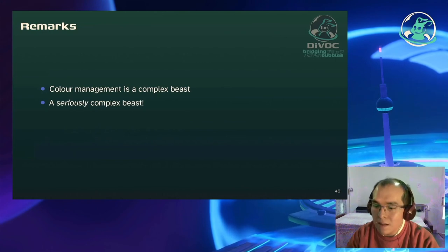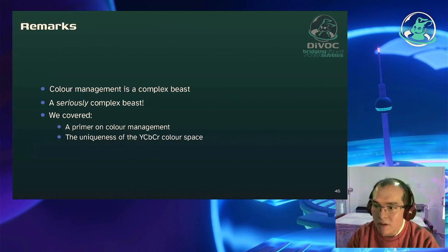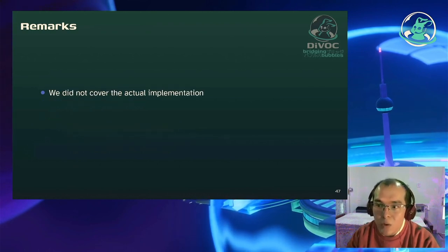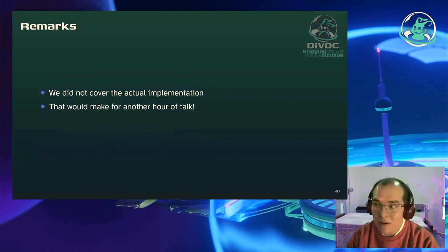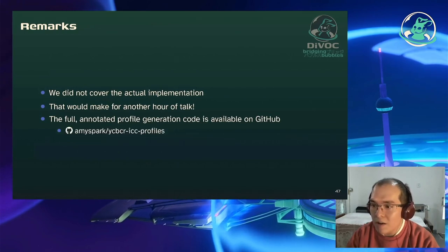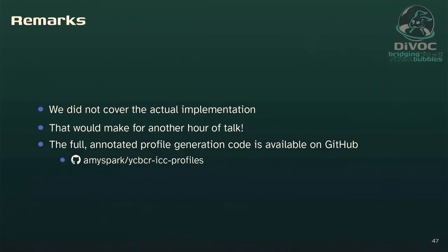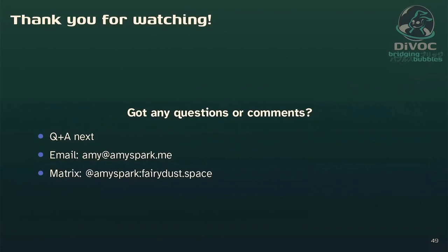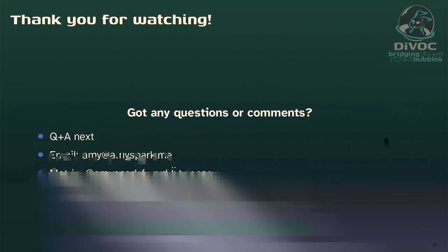Farbmanagement ist ein komplexes Biest – ein wirklich sehr, sehr komplexes Biest. Wir haben die Anfänge von Farbmanagement besprochen und wie der YCbCr-Farbraum speziell ist. Über Implementierungen haben wir nicht gesprochen, das wäre eine weitere Stunde. Den kompletten Code habe ich auf GitHub gestellt: me-spark-y-c-b-c-r-i-c-c-profile. Das ist jetzt alles schon in den Nightlies von Krita verfügbar – nicht empfohlen für produktive Nutzung, aber schon zum Runterladen. Danke fürs Zugucken und ich bin offen für Fragen.